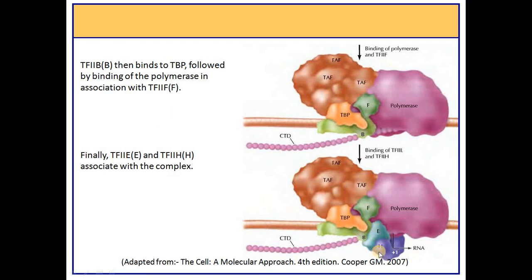Finally, TF2E and TF2H are recruited to form the initiation complex for transcription of mRNAs. TF2H is particularly interesting — one subunit unwinds the DNA at the transcription start site so transcription can begin, and the other subunit phosphorylates the C-terminal domain of RNA polymerase 2. Phosphorylation of the C-terminal domain acts as a signal for transcription initiation.